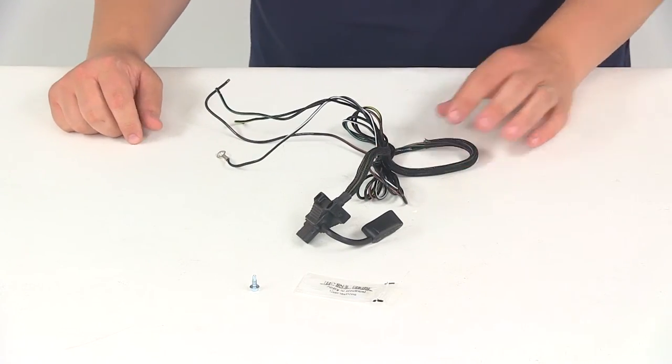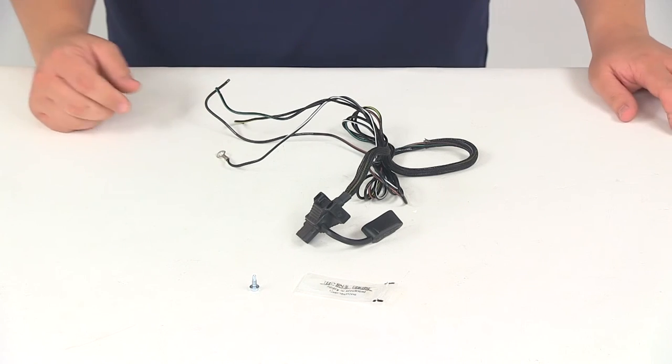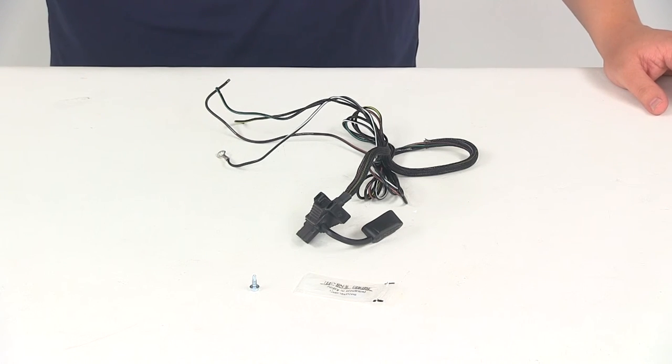That's going to do it for today's review of part number HM48030, the Hopkins Endurance 4-way flat trailer connector socket for the vehicle end.